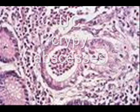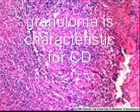We can also differentiate between the diseases based on histology. In ulcerative colitis we see crypt abscesses, which are highly characteristic. In Crohn's disease we see non-caseating granulomas, which are characteristic of Crohn's.